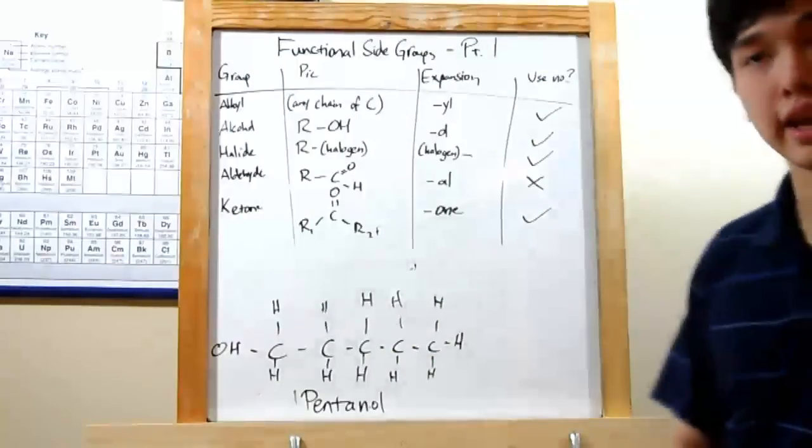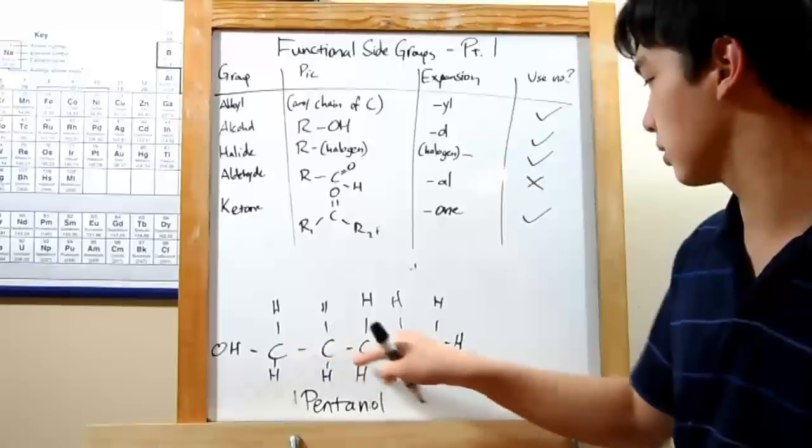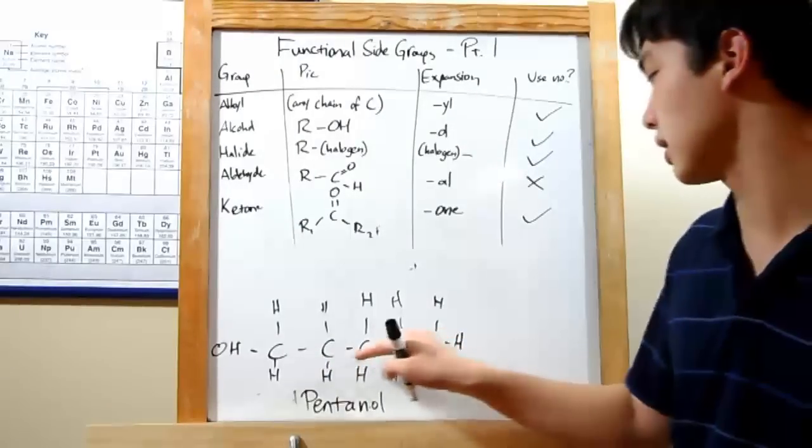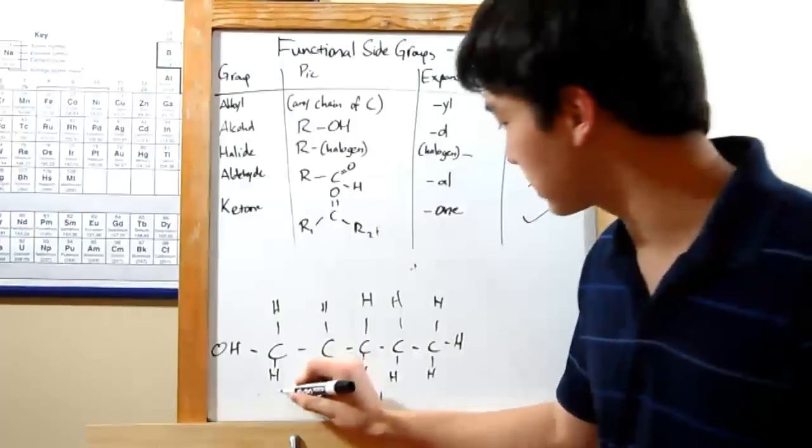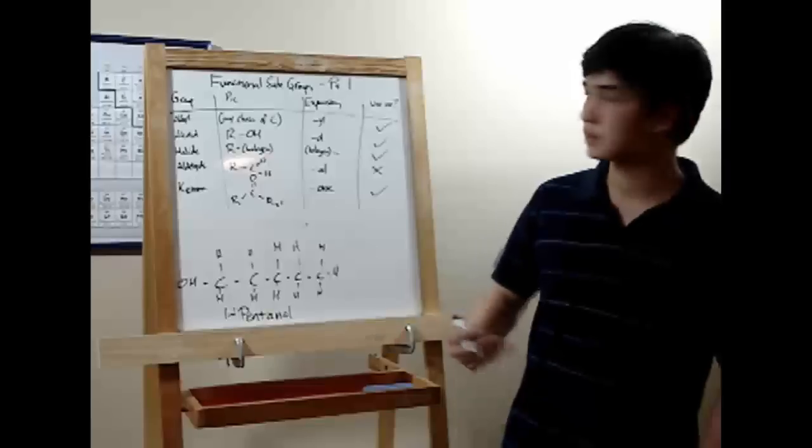And again, use number to indicate where it is. So either one, two, three, four, five, or one, two, three, four, five. One is smaller than five, so this is going to be one pentanol.